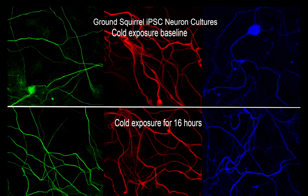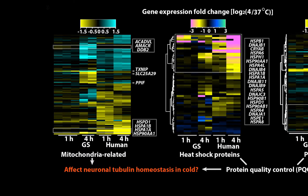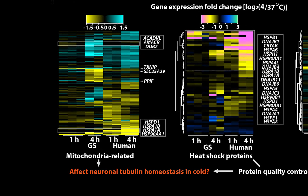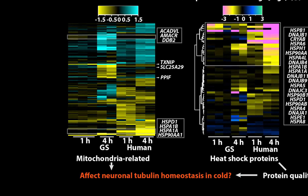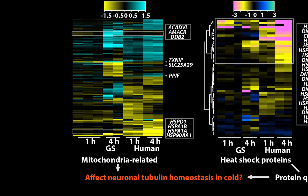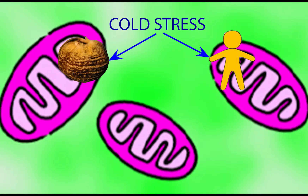Fortunately, these ground squirrel iPS-derived cells maintain their cold-resistant feature. By comparing human iPS-derived neurons to the ground squirrel iPS-derived neurons, we try to understand how they respond differently to cold treatment. Comparative RNA profiling of the squirrel and human neurons revealed that cold exposure altered the expression of genes associated with the mitochondria.